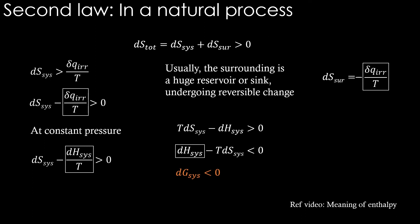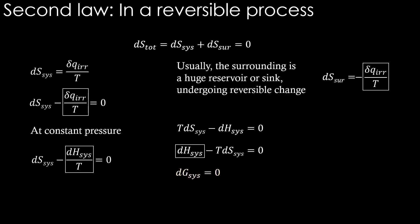So Gibbs energy change must be negative for a natural process to occur. For a reversible process, Gibbs energy change is equal to zero. Of course, you could have sensed by now that Gibbs energy is not a straightforward energy like enthalpy or internal energy. However, we can calculate the change in Gibbs energy value for a process and use it as a criteria to conclude about its feasibility.